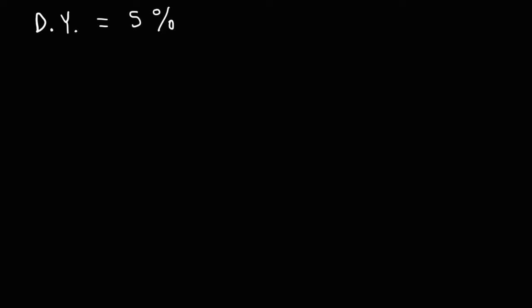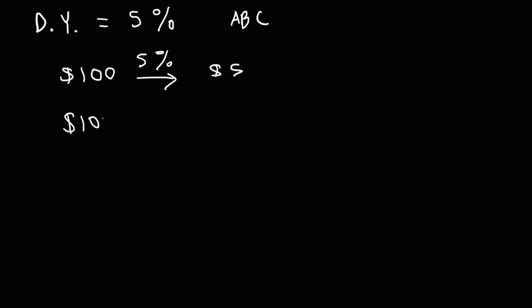So what does that tell us? Well, if we decide to buy $100 worth of stock in this company — let's say it's company ABC — we're going to earn 5% of that money per year. 5% of $100 is $5, so the company is going to pay us $5 in dividends each year.